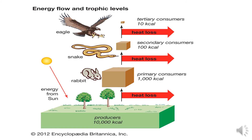Energy flow and trophic levels. The amount of energy at each trophic level decreases as it moves through an ecosystem. As little as 10% of the energy at any trophic level is transferred to the next level; the rest is lost largely through metabolic processes as heat. For example, if a grassland ecosystem has 10,000 kilocalories of energy concentrated in vegetation, only about 1,000 kilocalories will be transferred to primary consumers, and only 10 kilocalories will make it to the tertiary level.